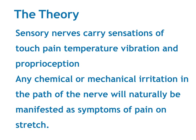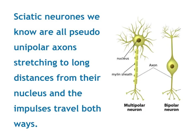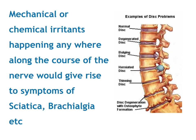The theory says that sensory nerves carry sensations affecting pain, temperature, vibration, proprioception, and chemical or mechanical irritation in the pathogenic nerve will be manifested as pain or stretch. Sciatic neurons are pseudo-unipolar axons and the nucleus is at a far away distance from the most terminal part of the cells, and the impulses travel both ways. Mechanical or chemical irritants along the course of the nerve cause the symptoms of sciatica, brachialgia, etc.